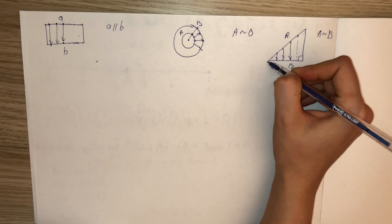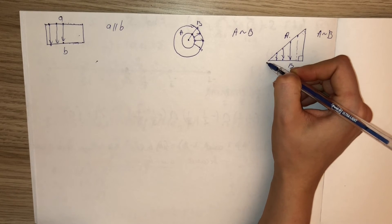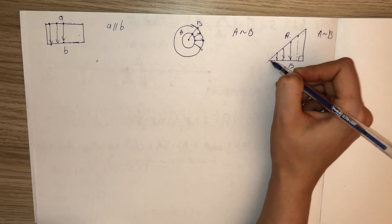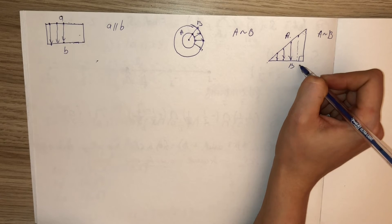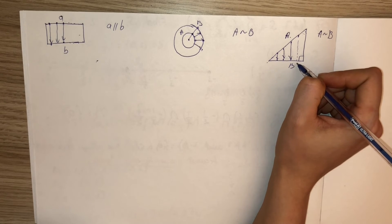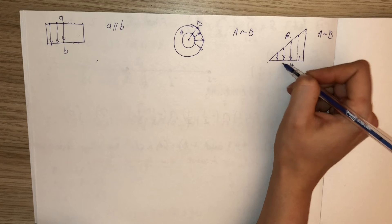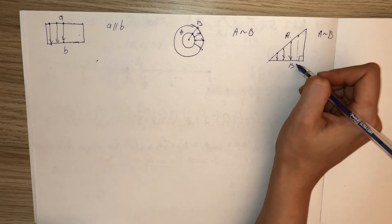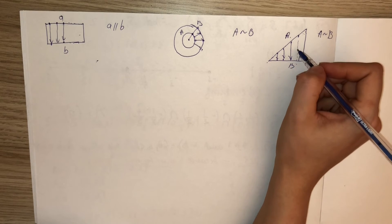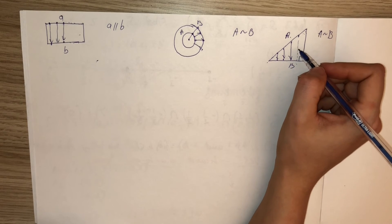Also, let A be the set of points on the hypotenuse of a right triangle and B on a leg. By drawing vertical lines, we can see there is a one-to-one correspondence between A and B. So A is equivalent to B — the hypotenuse is equivalent to the leg, despite the leg being shorter.